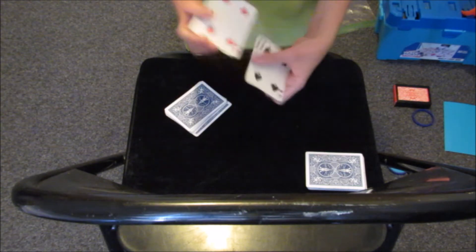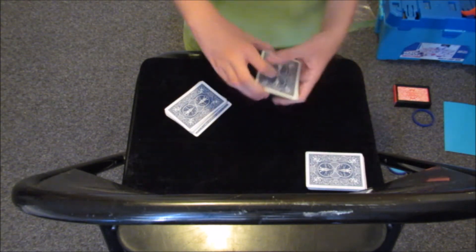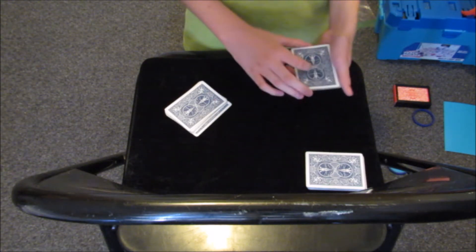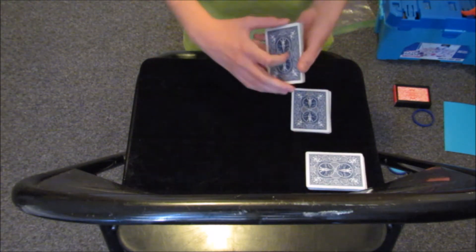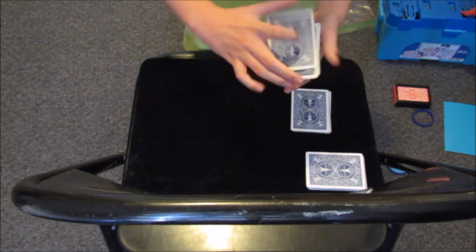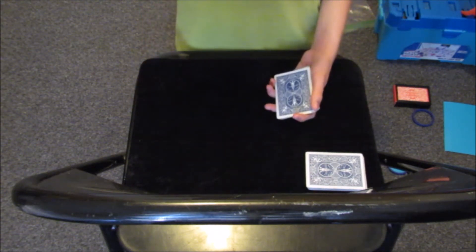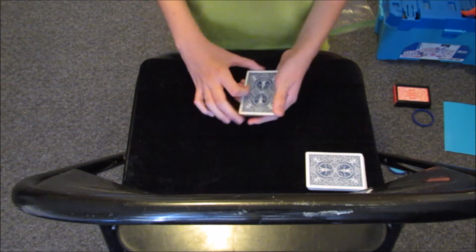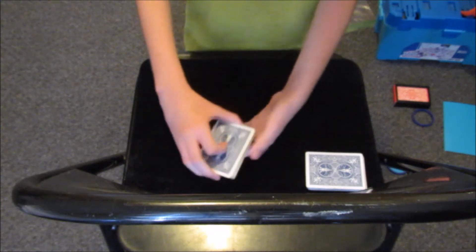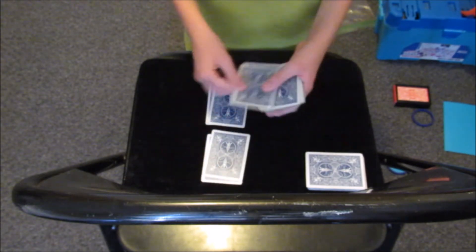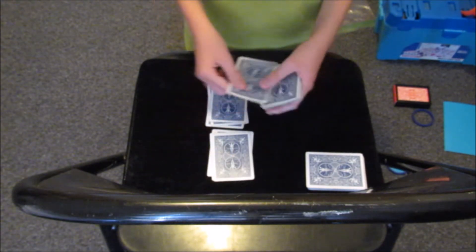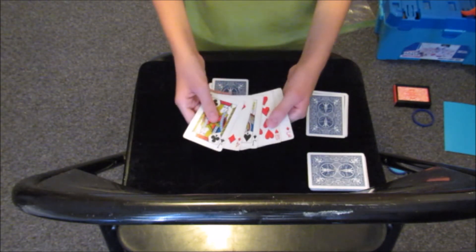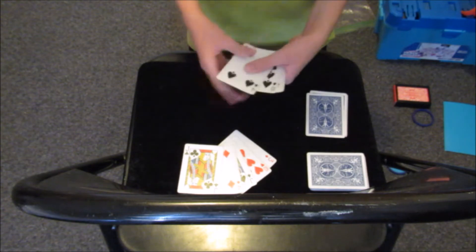Now have them do the same thing again, dealing me first. One, one, two, two, three, three, four, four, five, five. Let's see what hand they have - they have a pair again and I have two pair, two fours and two tens.